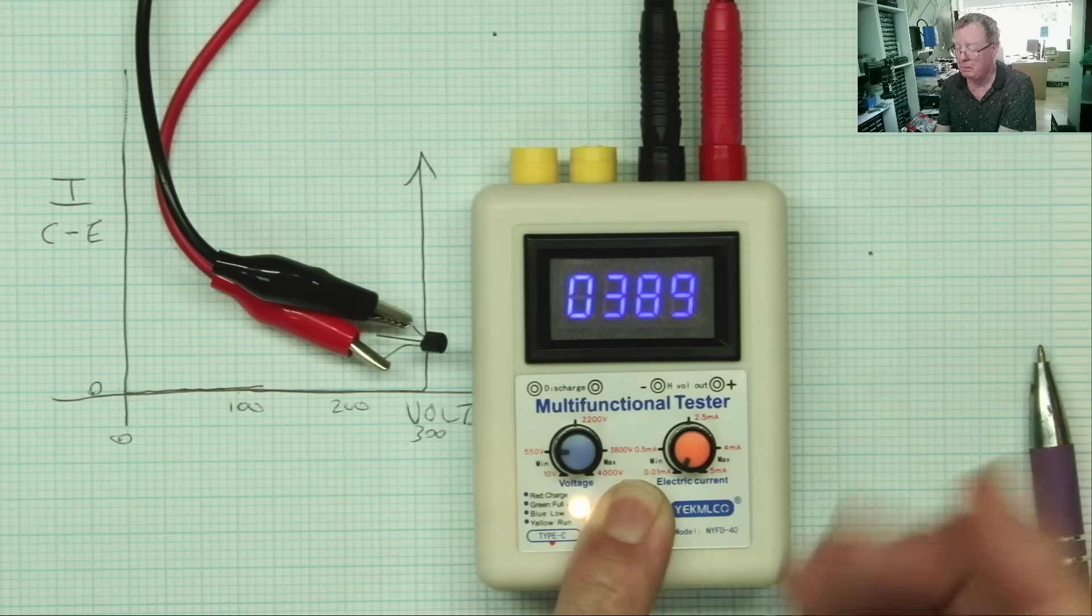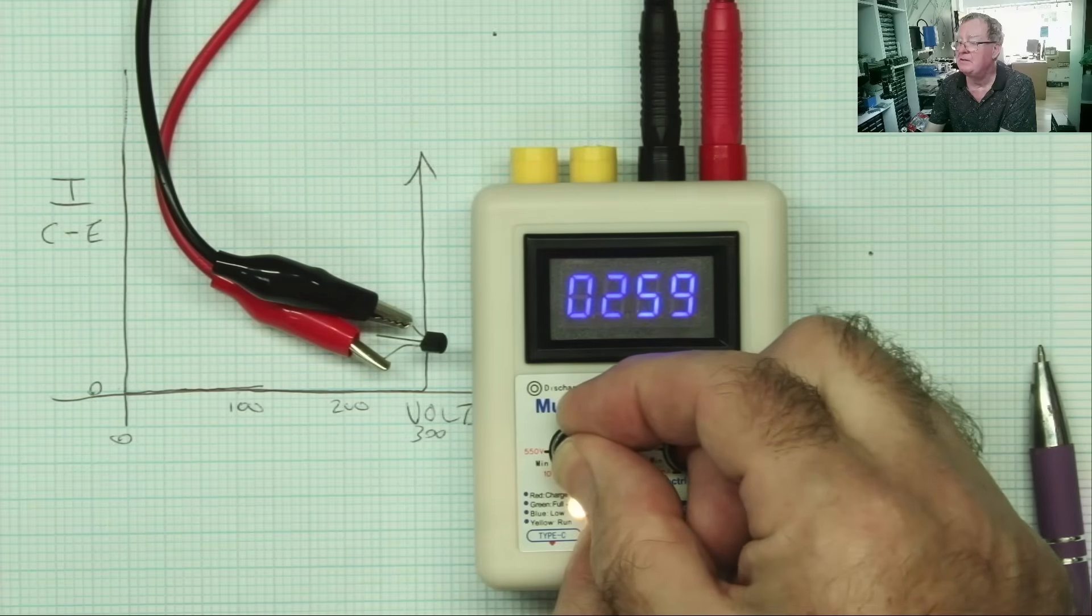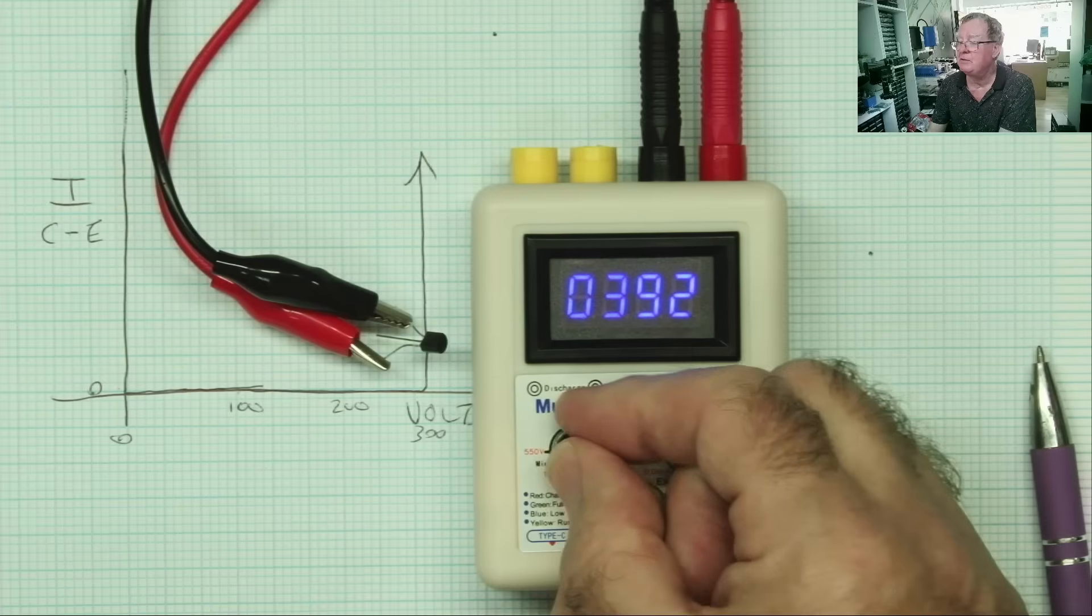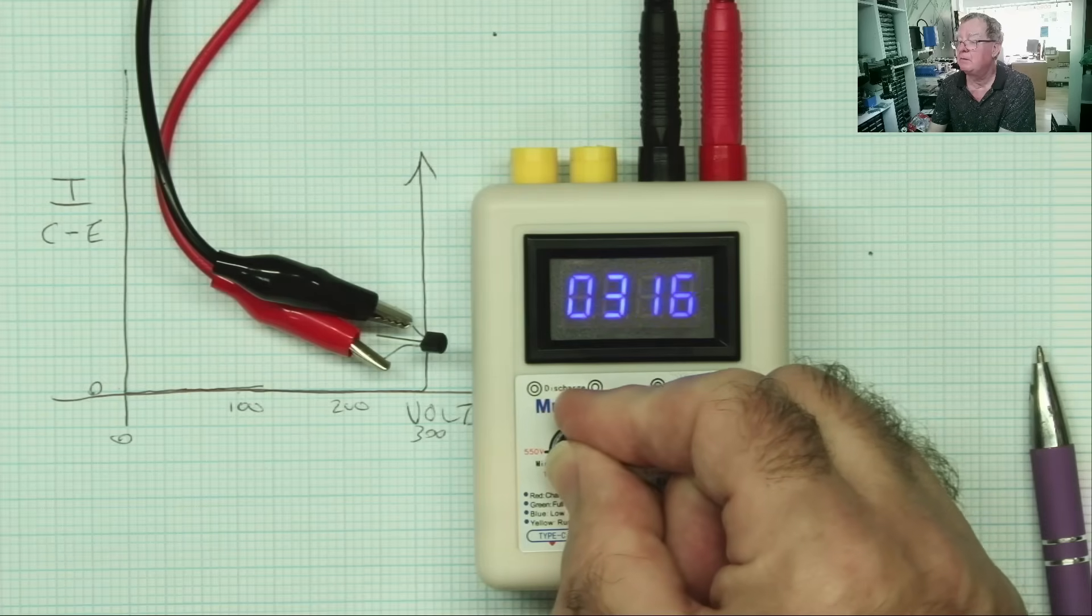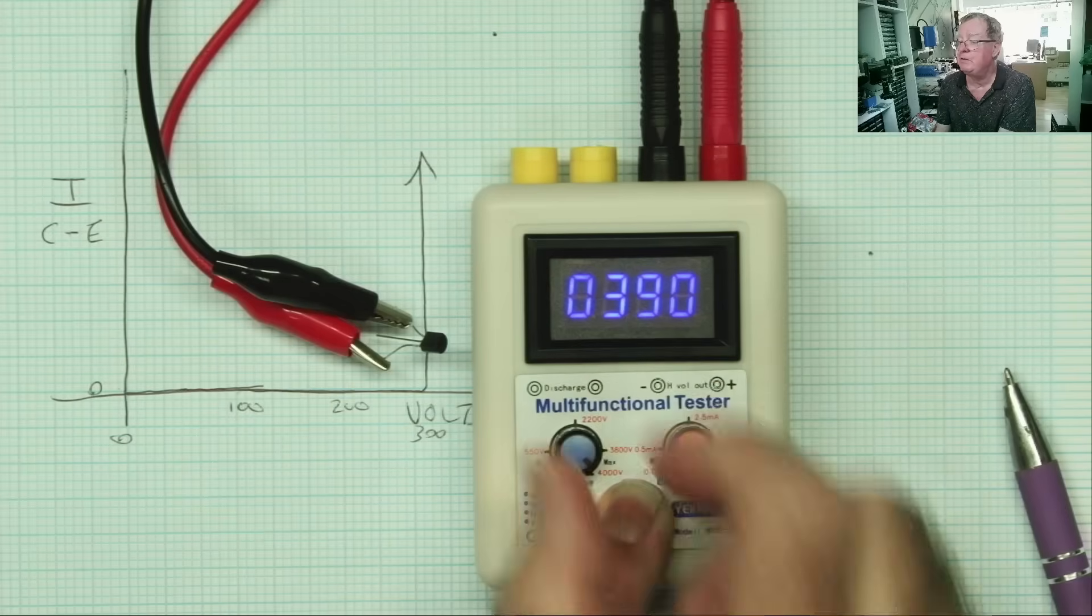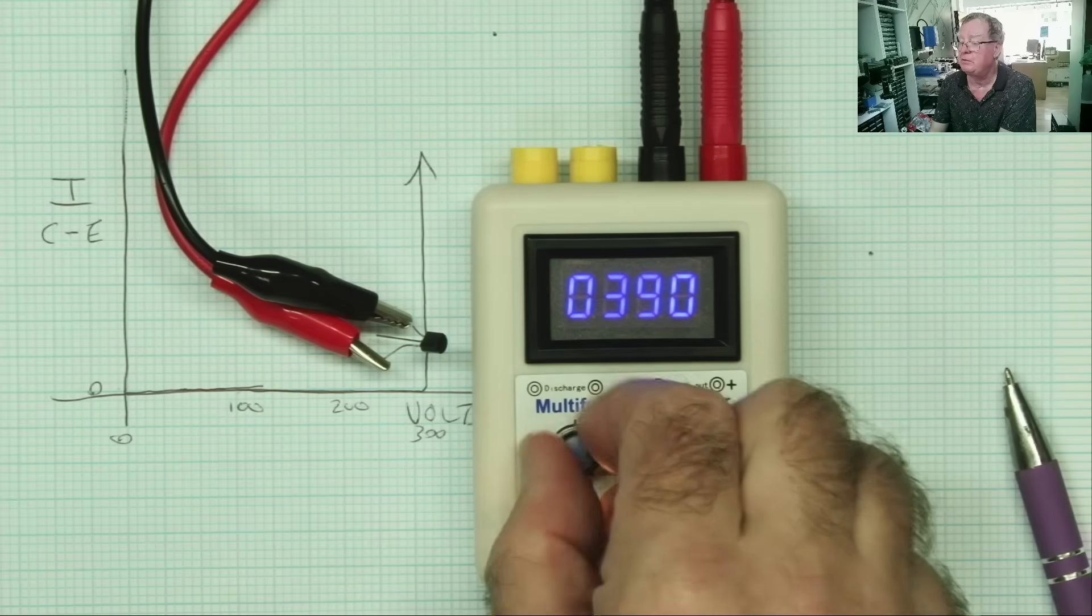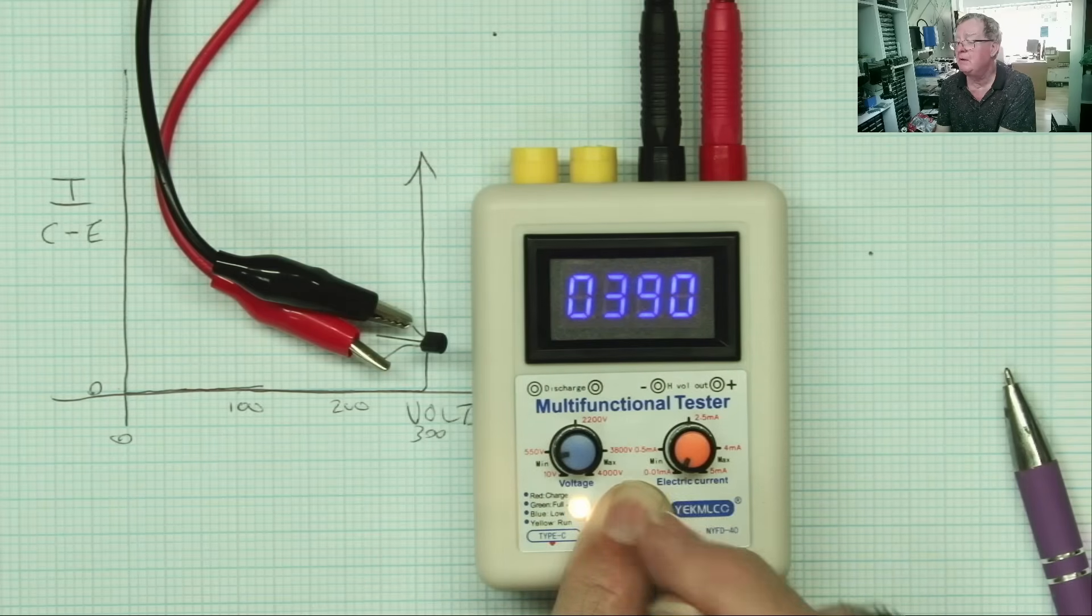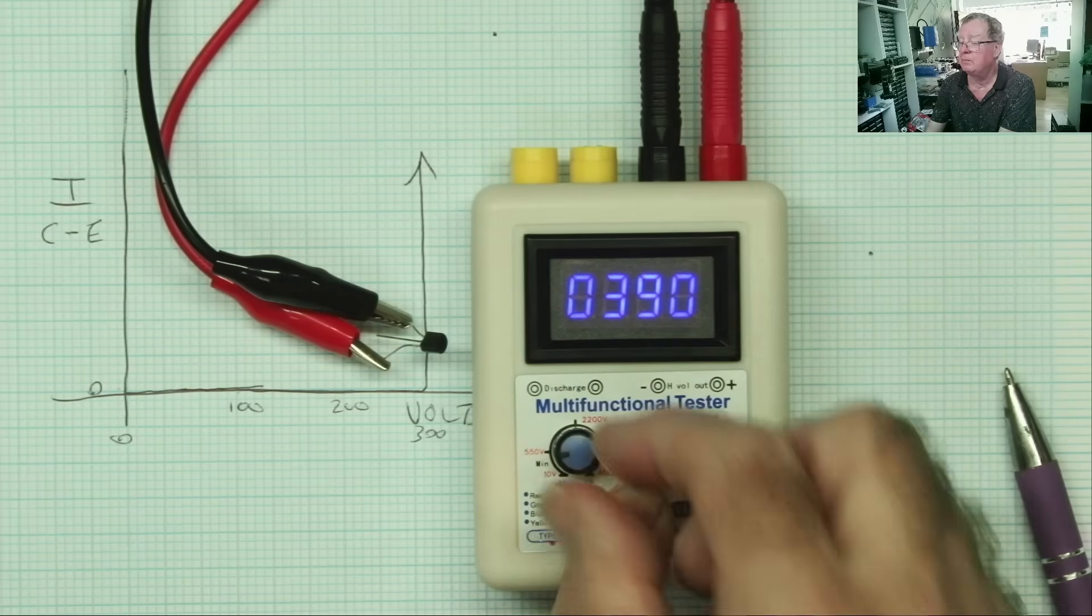And at some point it reaches 389 volts and it won't go any more. I can set it to less, but once it reaches that 392, it varies a little bit. It won't go any more. And once it won't go any more, it doesn't matter what I do with the voltage. It won't go any more. And the reason it won't go any more is because the current won't go any more.